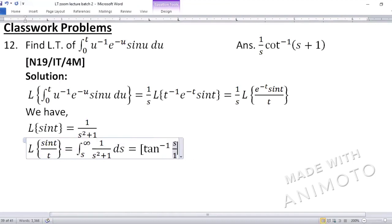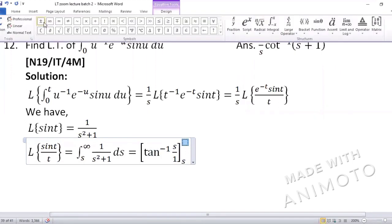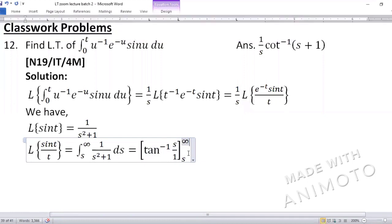Tan inverse s upon 1. And here we have to put the limit from s to infinity. So this is not something new I am doing it. Yeh pehle bhi ham log kar chuk hai. Division by t wala concept. Wohi chiz repeat ho raha hai. Then you substitute infinity first. So that will become tan inverse of infinity. Or minus second time toh woh tan inverse of s hi rah jata hai.